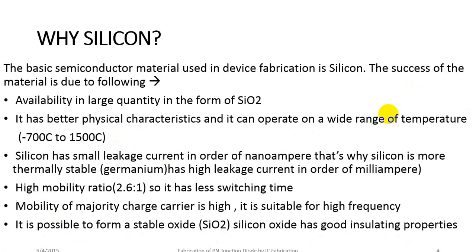Why silicon? The basic semiconductor material used in device fabrication is silicon. It is available in large quantity. It has better physical characteristics and can be operated over a wide range of temperature, from minus 700 degrees Celsius to 1500 degrees Celsius. Silicon has a small leakage current in the order of nanoamperes, making it more thermally stable compared to germanium.